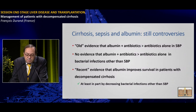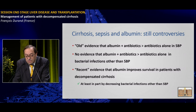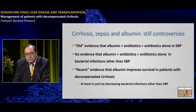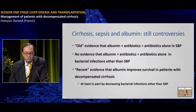We are now faced with a paradox. Old evidence shows albumin plus antibiotics are superior to antibiotics alone in SBP. There was no clear evidence that albumin plus antibiotics are superior for non-SBP bacterial infections. Yet now very recent evidence suggests albumin may improve survival in decompensated cirrhosis, partly through a decreased rate of non-SBP bacterial infections. All of this will need to be clarified.